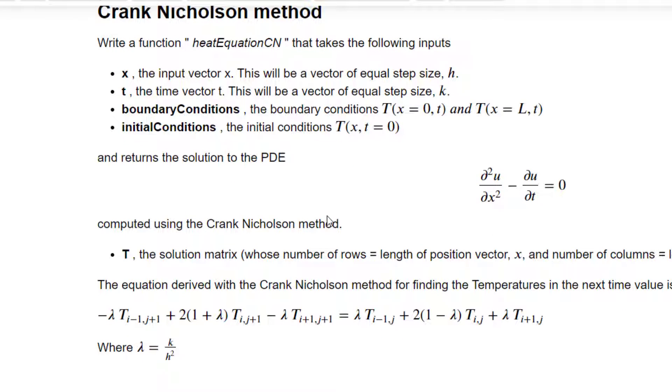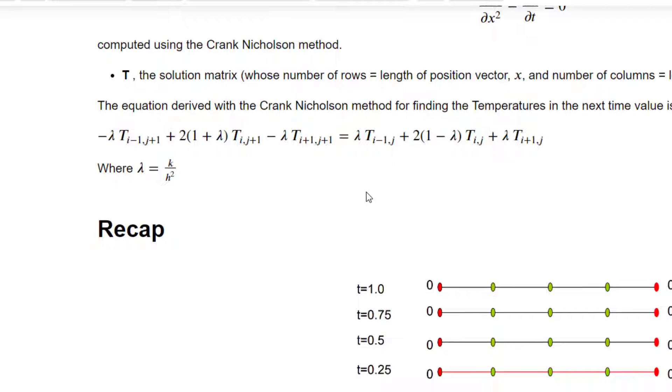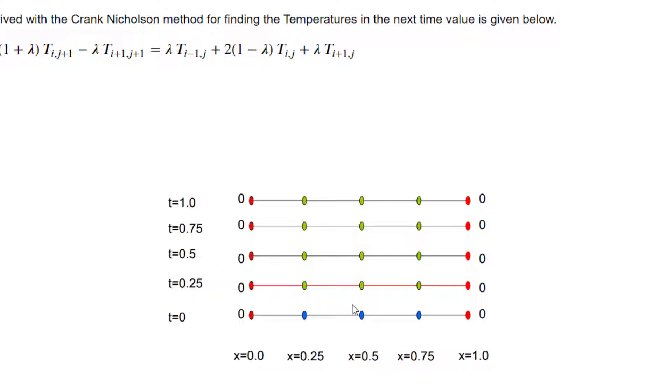So the first step is to do discretization. We covered these methods in the previous videos, but I will just recap it here. The first step is to discretize your domain into discrete points. We discretize the position along this axis and we discretize the time as well as shown on the left axis.